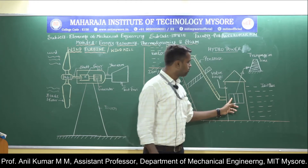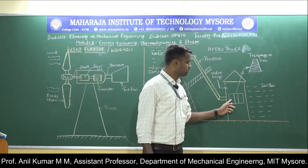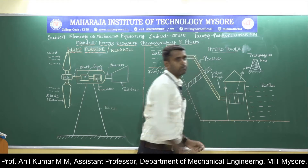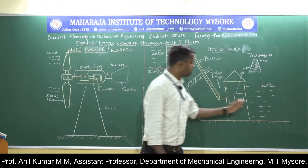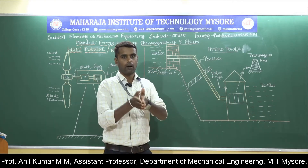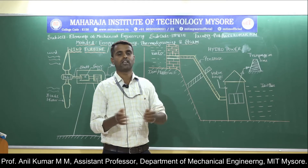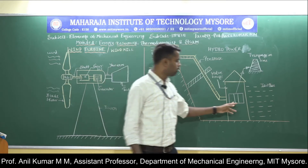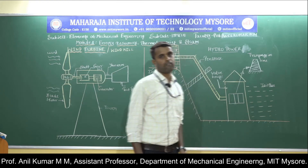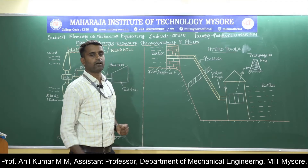The power house consists of the turbine and the generator, connected with the help of a shaft. The draft tube is a pipe having a gradually increasing area, used for discharging the water from the turbine back to the tailrace. That is the construction of the hydroelectric power plant.